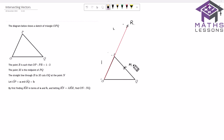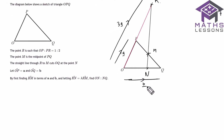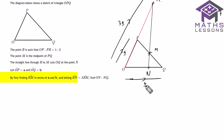The straight line through R to M cuts OQ at the point N, so let's draw that straight line in — there's our point R, M, and it cuts at the point N. Now we know OP equals a, so this distance here is a, making this three a. And we know that O to Q all the way from O to Q is equal to b.